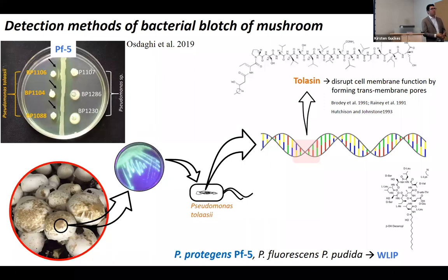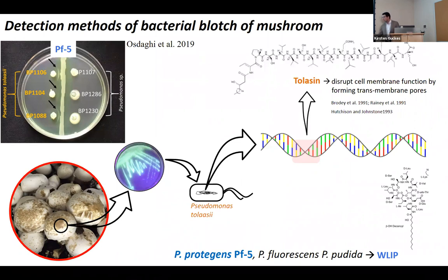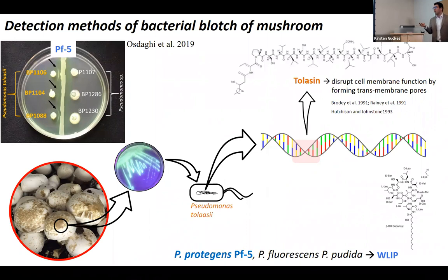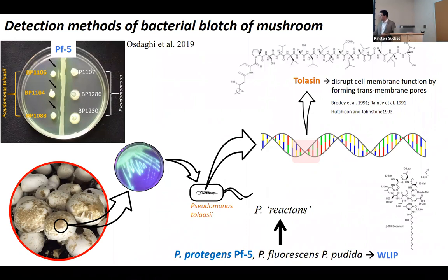Another way to detect Pseudomonas tolasei is through the white line reaction assay. Basically, certain Pseudomonas species — including P. protegans PF5 and fluorescens — produce a lipopeptide called the white line inducer principle. When it interacts with tolasin, which is another lipopeptide, it produces a white line. As you can see in this plate, three strains of P. tolasei form the white line, while Pseudomonas that did not produce tolasin did not. This is why these species are called Pseudomonas reactans, though that is not a valid taxonomic name.